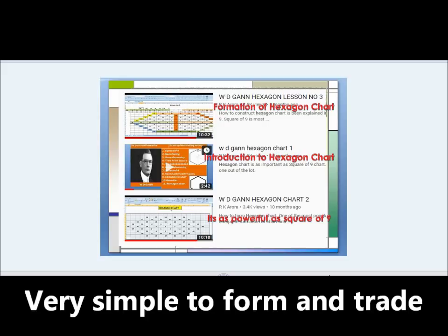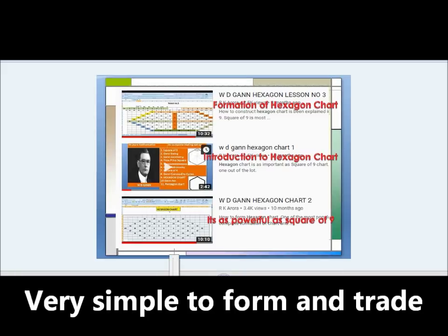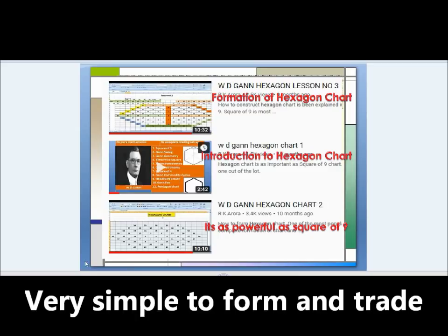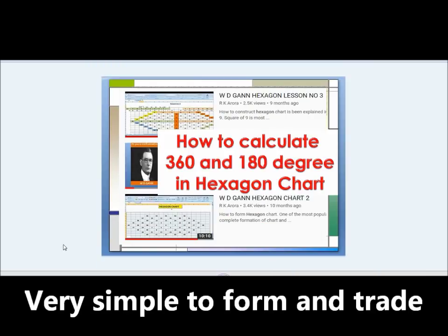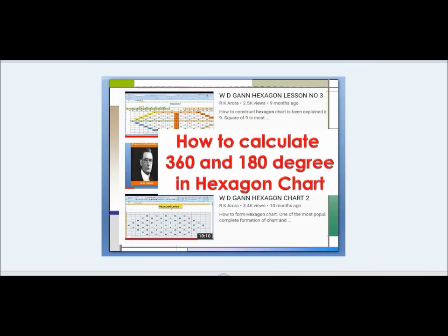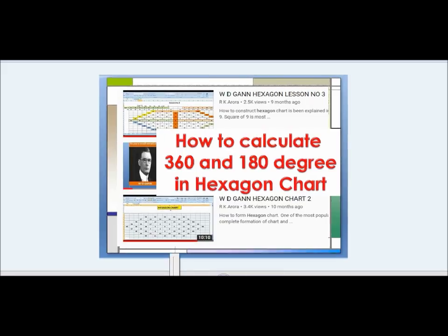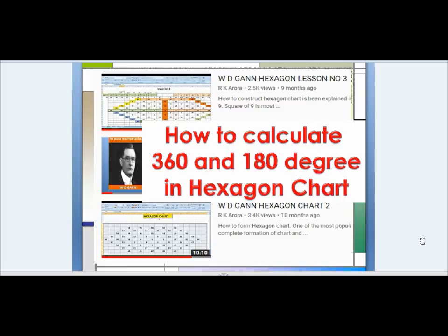Static or dynamic levels can be calculated the same way as Square of Nine. What we need is to understand the Hexagon Chart. I have already posted three videos on this, and just yesterday I posted a video on how to calculate 360 degrees in Hexagon Chart.